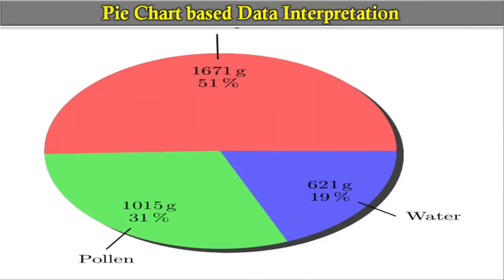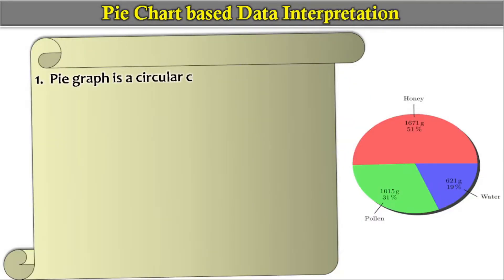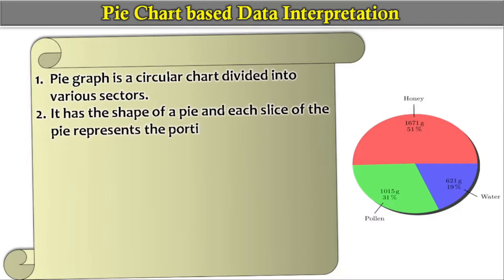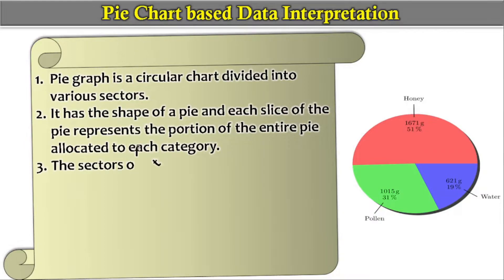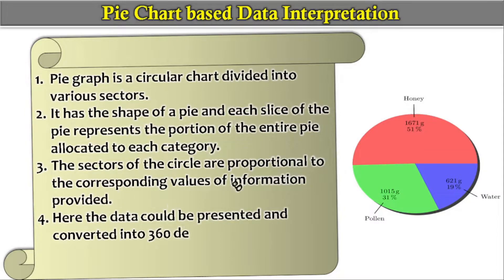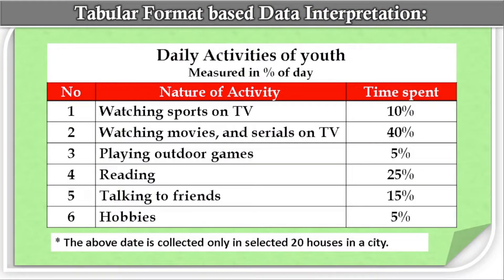The third type is pie chart based data interpretation. A pie chart or pie graph is a circular chart divided into various sectors. It has the shape of a pie, and each slice represents the portion of the entire pie allocated to each category. The sectors of the circle are proportional to the corresponding values of the information provided. Data can be presented and converted into 360 degrees, or in percentage, or in fraction.